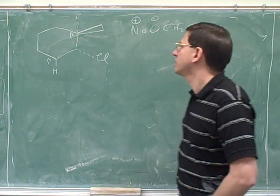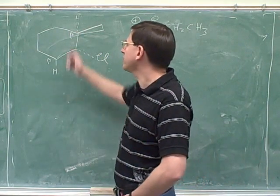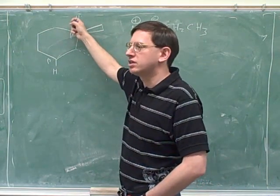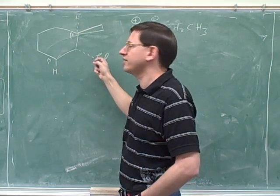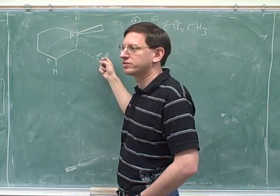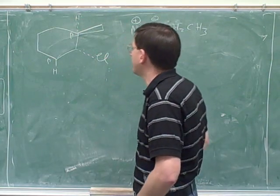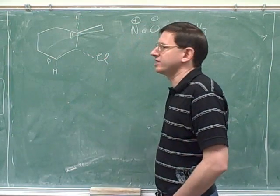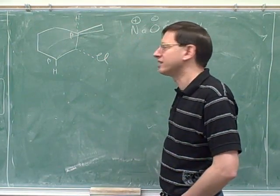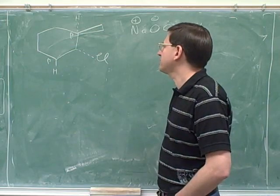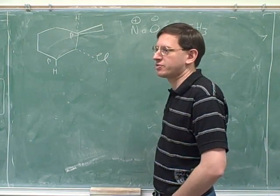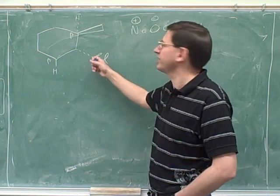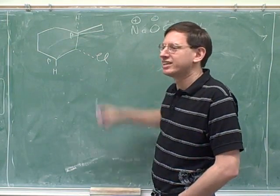However, the next consideration is we can only attack this hydrogen if it can get itself anti-periplanar to the leaving group. Was it anti-periplanar yet? No. You can clearly see that, because anti means pointing in opposite directions, but they're both pointing down.